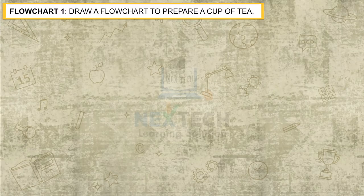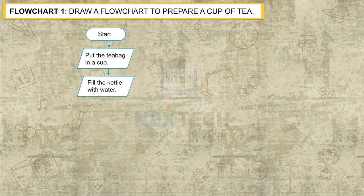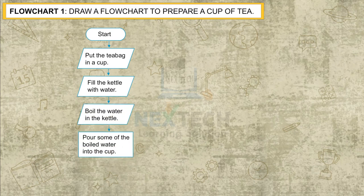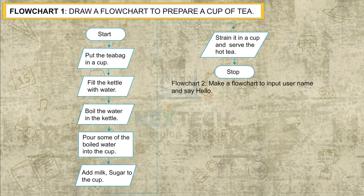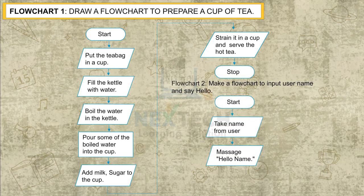Let us create flowcharts for the algorithms written till now. Flowchart 1: Draw a flowchart to prepare a cup of tea. Start. Put the tea bag in a cup. Fill the kettle with water. Boil the water in the kettle. Pour some of the boiled water into the cup. Add milk and sugar to the cup. Strain it in a cup and serve the hot tea. Stop. Flowchart 2: Make a flowchart to input a username and say hello. Start. Take name from user. Message: hello name. Stop.